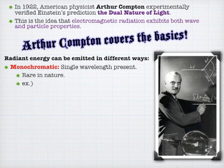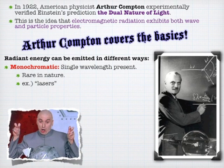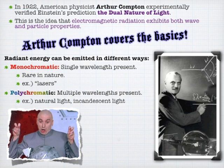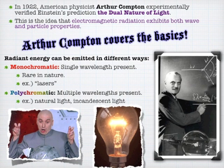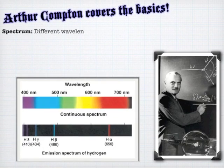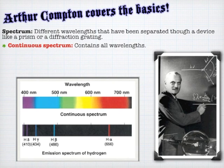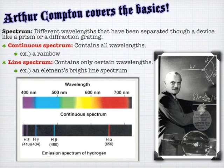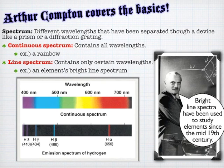We'll quickly run through some terminology that will come in handy when we talk about light. There's monochromatic, which means single wavelength, like a laser. Or polychromatic, where you have multiple wavelengths present, like incandescent or natural light. If we look at this in a drift spectrum, you'll either see lines or a broad spectrum. Remember that most electromagnetic radiation is outside our realm of detection. You can see a continuous spectrum or a line spectrum, and line spectrums have been used to identify stuff for a long time.